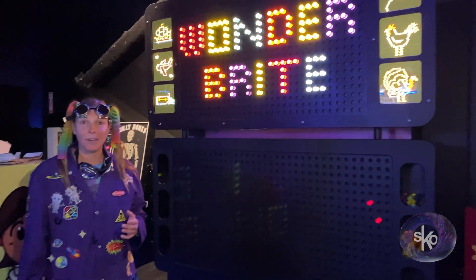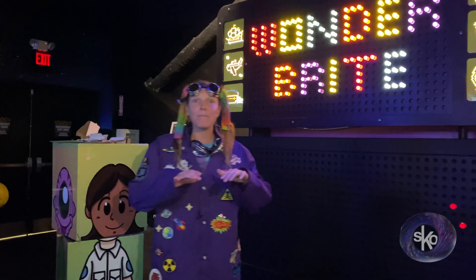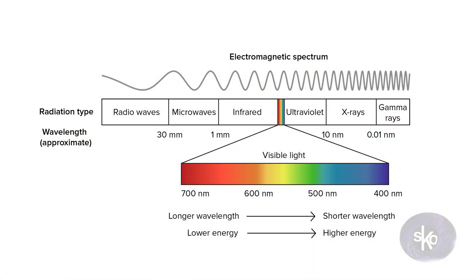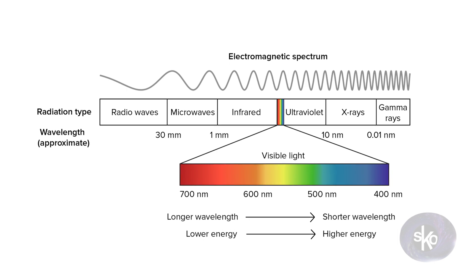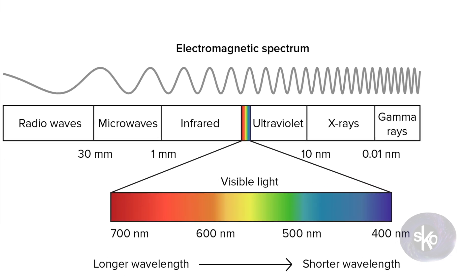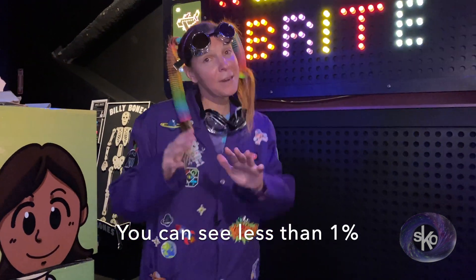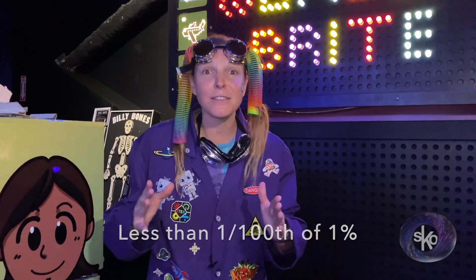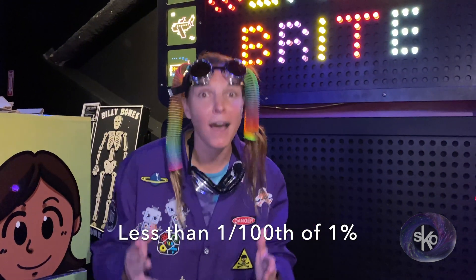The electromagnetic spectrum is the term used by scientists to describe the entire range of light, all the way from radio waves up to gamma rays. Our eyes can only see a tiny portion of that spectrum — and when I say tiny, I mean less than 1%, and when I say less than 1%, I mean less than one one-hundredth of 1%. Your eyes can detect wavelengths from approximately 400 to 700 nanometers. When you look in the sky and see a rainbow, all the colors fall within that range of wavelengths — we call this the range of visible light.